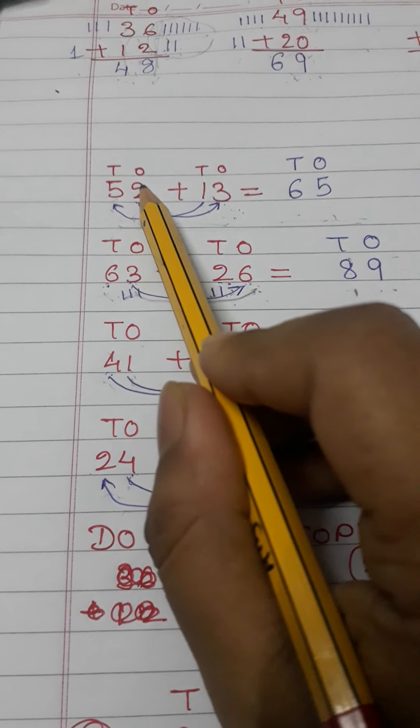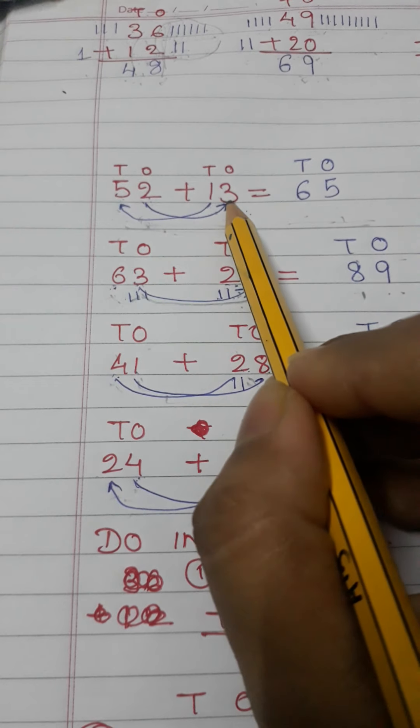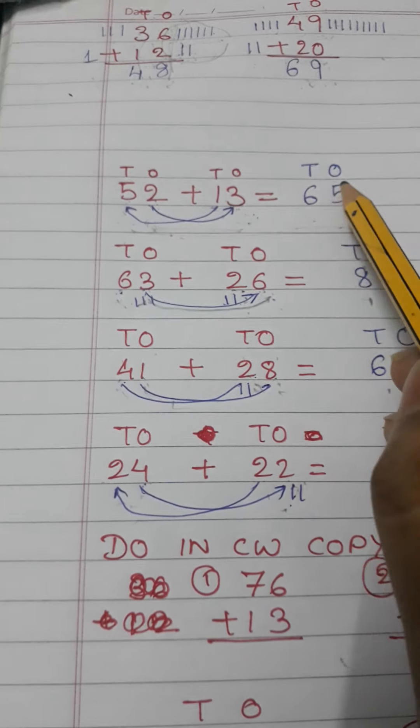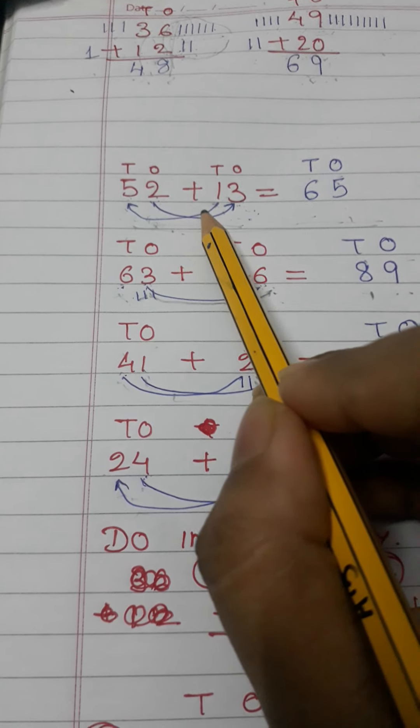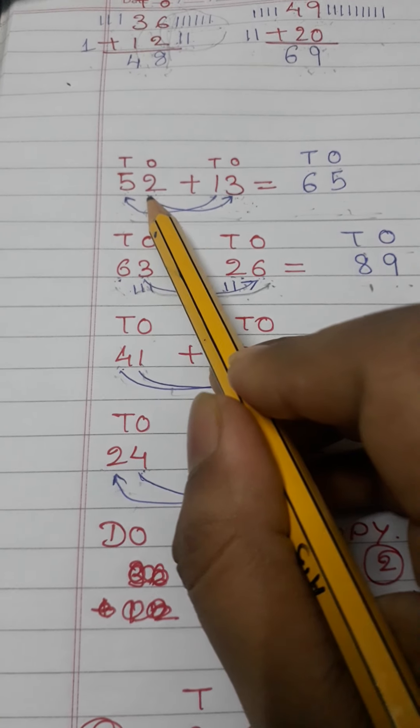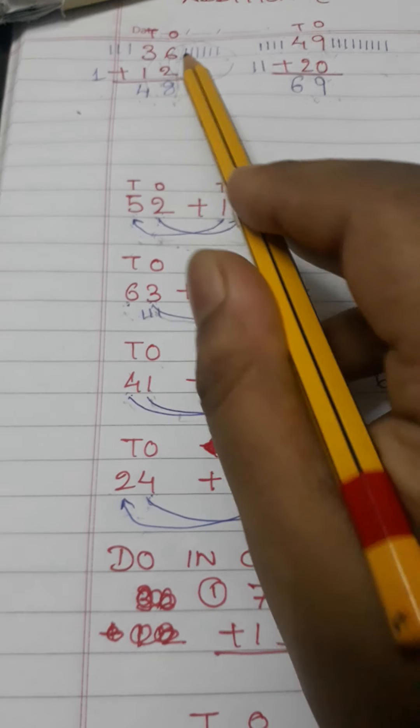First one is ones and this is tens. Similar for thirteen: this is ones, this is tens. Here I will write ones and tens first. Then I will add ones digit first, as here I have done - I have added the ones digit first.